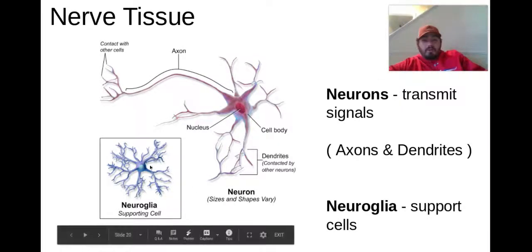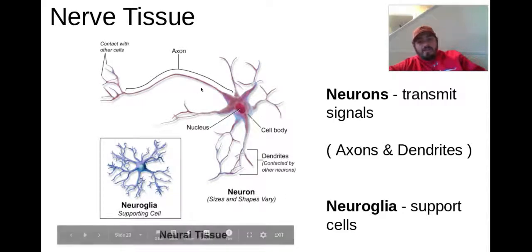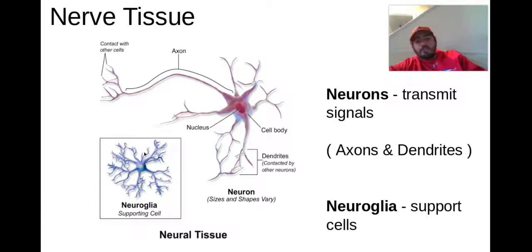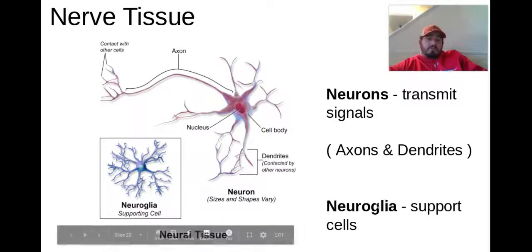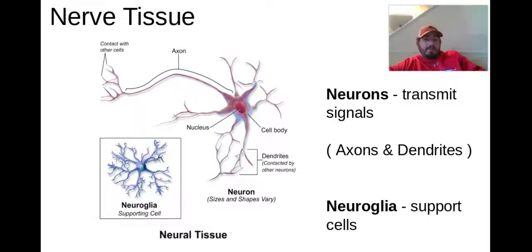Then you have really cool supporting cells called neuroglia. They're not like neurons with a long axon to send signals — they're kind of around the neurons and just supporting them in terms of that nervous tissue, helping with receiving, transmitting, and processing signals.